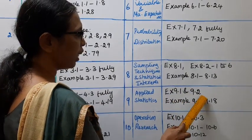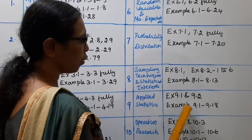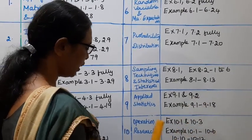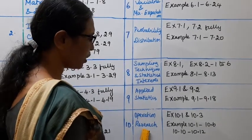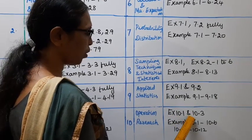Ninth chapter: Applied Statistics. Exercise 9.1 and 9.2 fully. Example 9.1 to 9.18.